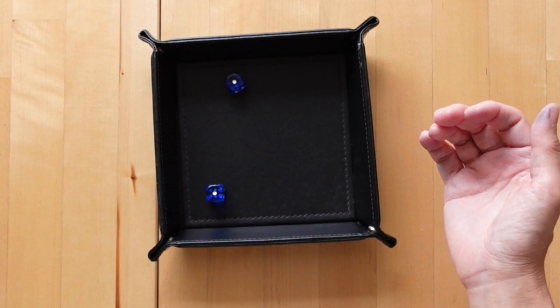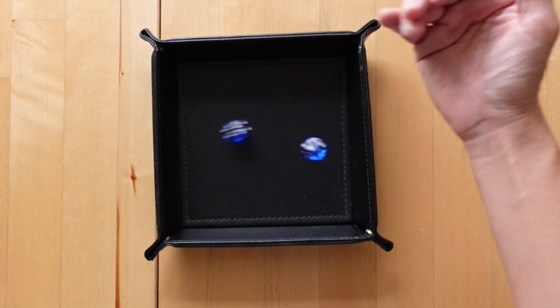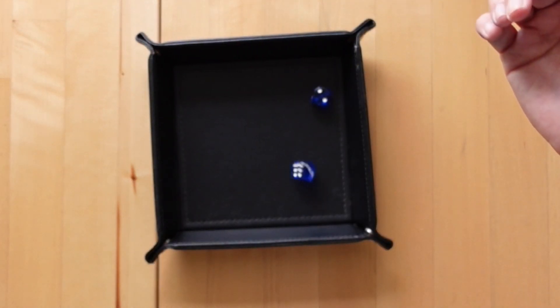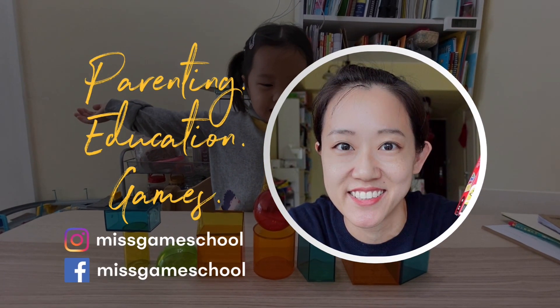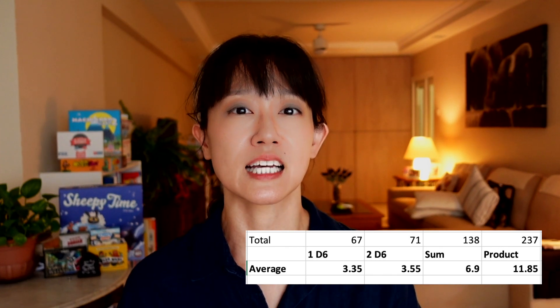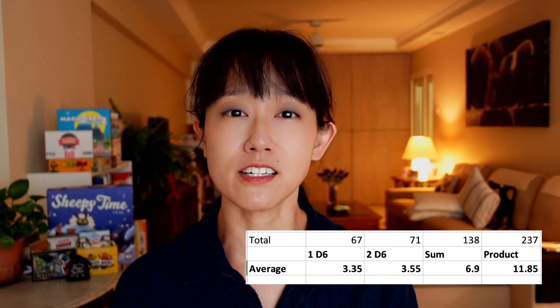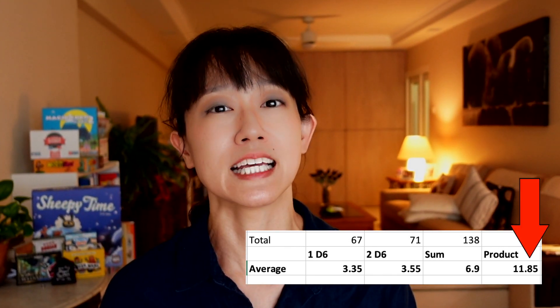I then did a 20-roll test with two D6 dice, but it actually has an average total of seven. When two D6s are multiplied together, I got an average product of around 11.